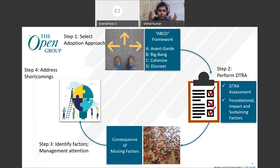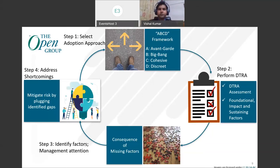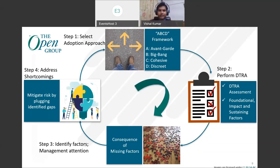The fourth step, after you have seen the missing pieces of the jigsaw puzzle, is to fix those puzzles and build a better organization by fixing those gaps. That's step four: address the shortcomings. This will help mitigate risk by plugging the identified gaps. Once you have done that, we can initiate the adoption of the new technology trends coming in the market. This is an iterative process — if you have chosen avant-garde with some business units and that cycle is complete, the next step would be to redo the circle with a new business unit or go with a big bang approach based on the context of the organization.